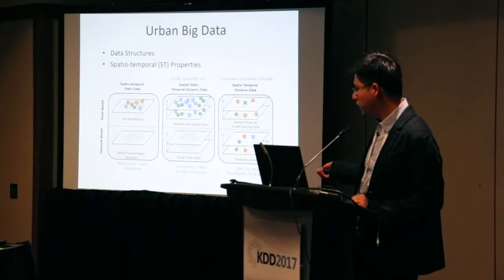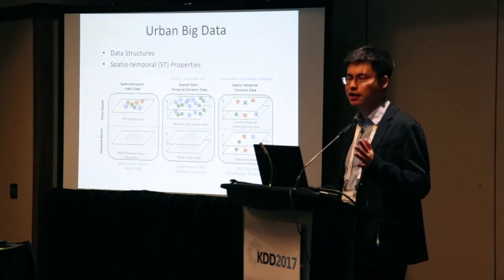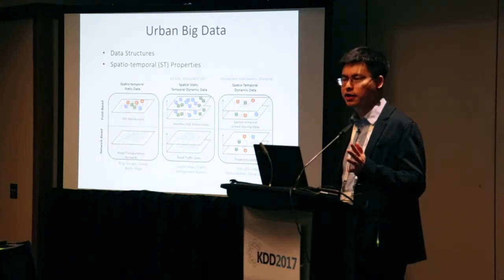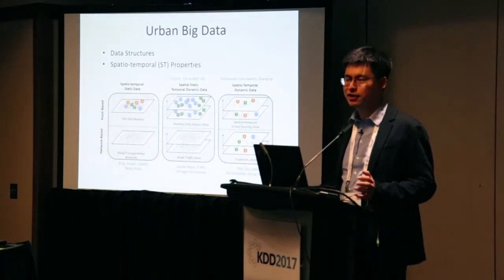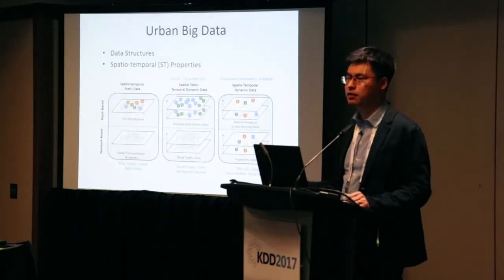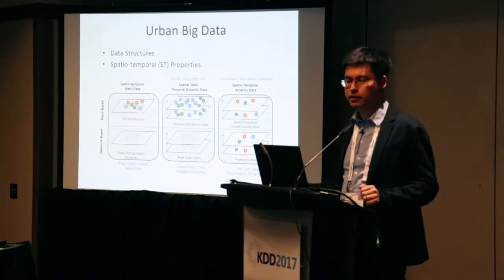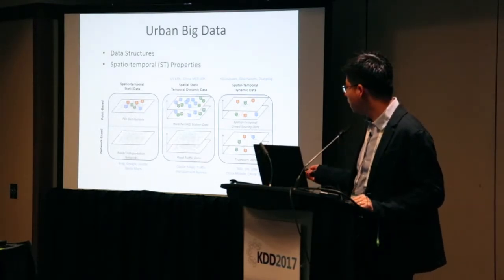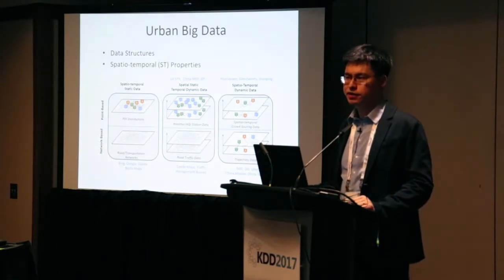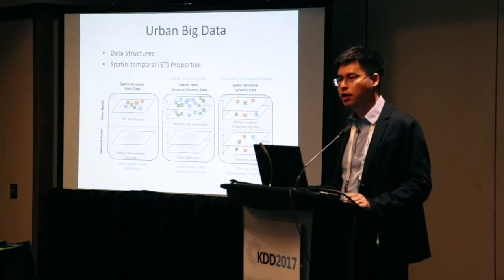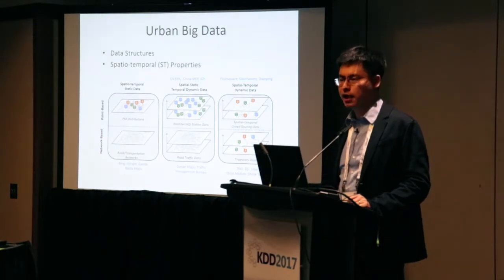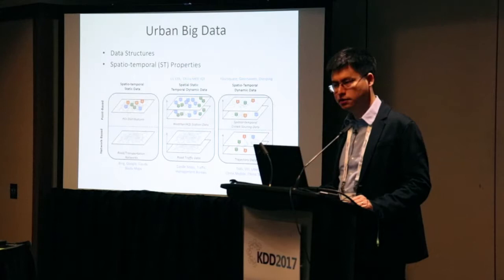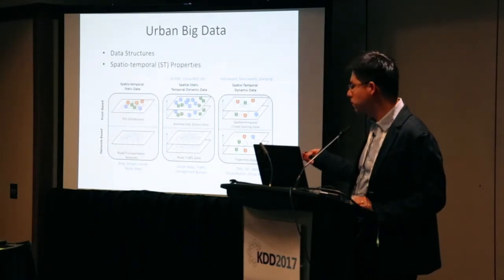For example, point-of-interest data — like a restaurant, university, or bus station — has a fixed location and fixed properties that don't change over time, so it is spatial-temporal static point data. IoT sensor data has a fixed deployment location but readings that change over time every hour — it is spatial-static, temporal-dynamic point data.